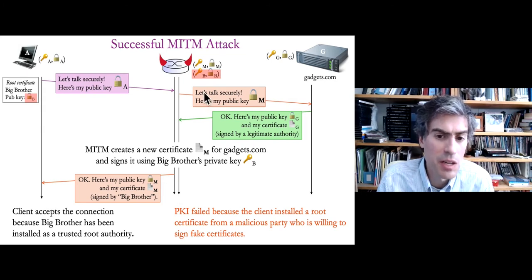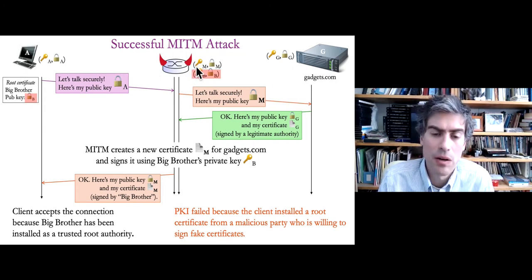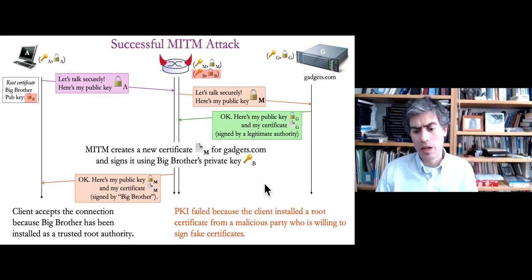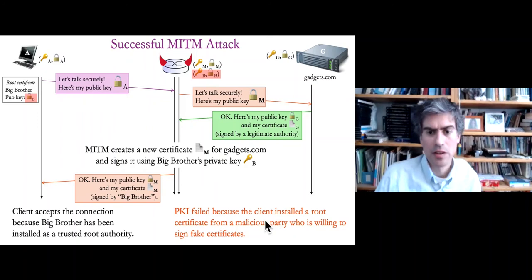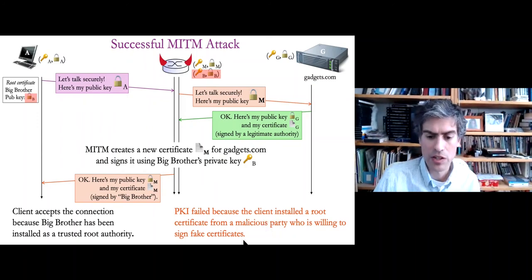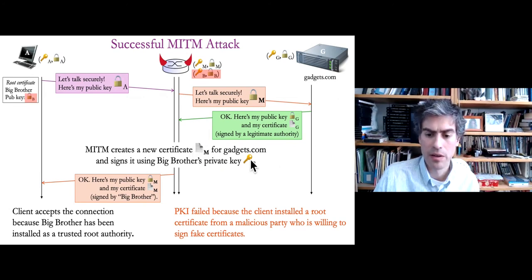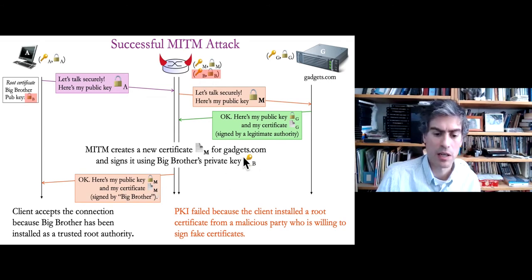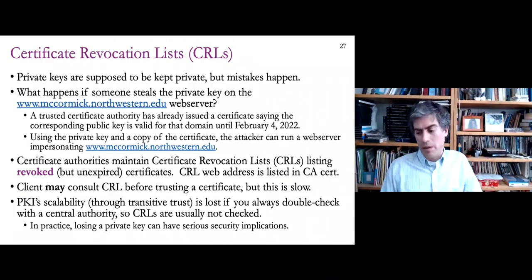A man-in-the-middle attack can succeed if you've convinced the client to install a malicious root certificate. In this case, the man-in-the-middle has convinced client A to install Big Brother's public key. If the router — the man-in-the-middle — has that private key, it can successfully launch the man-in-the-middle attack.